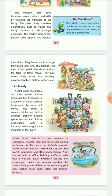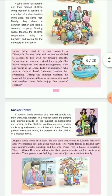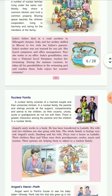Now, nuclear family. A nuclear family consists of a married couple and their unmarried children. In some cases, however, one or more additional persons may be living with them.